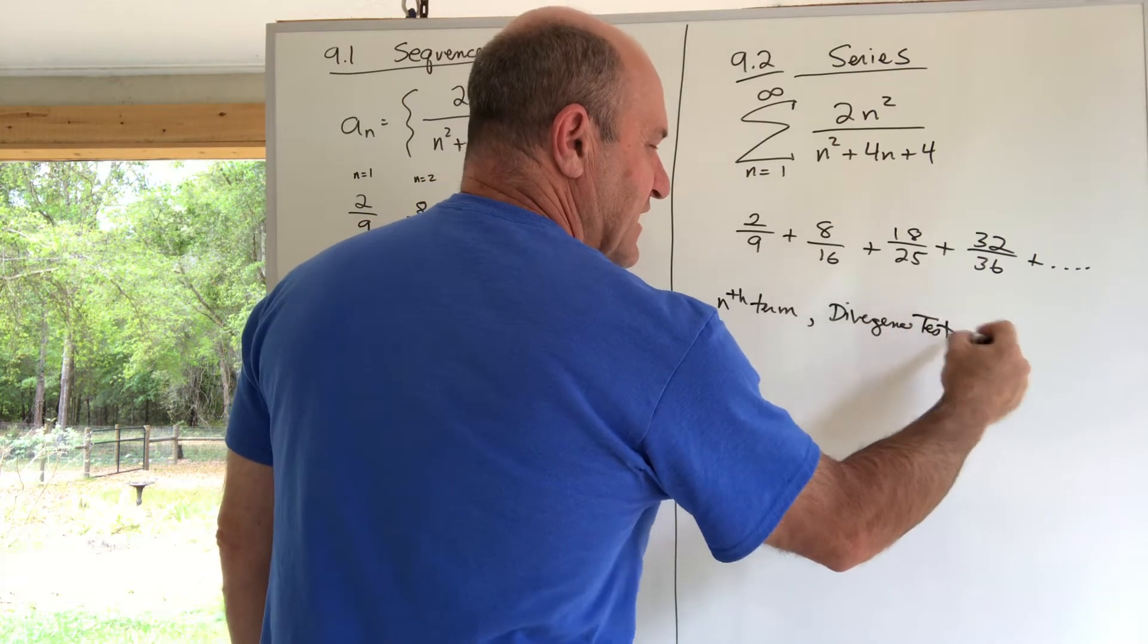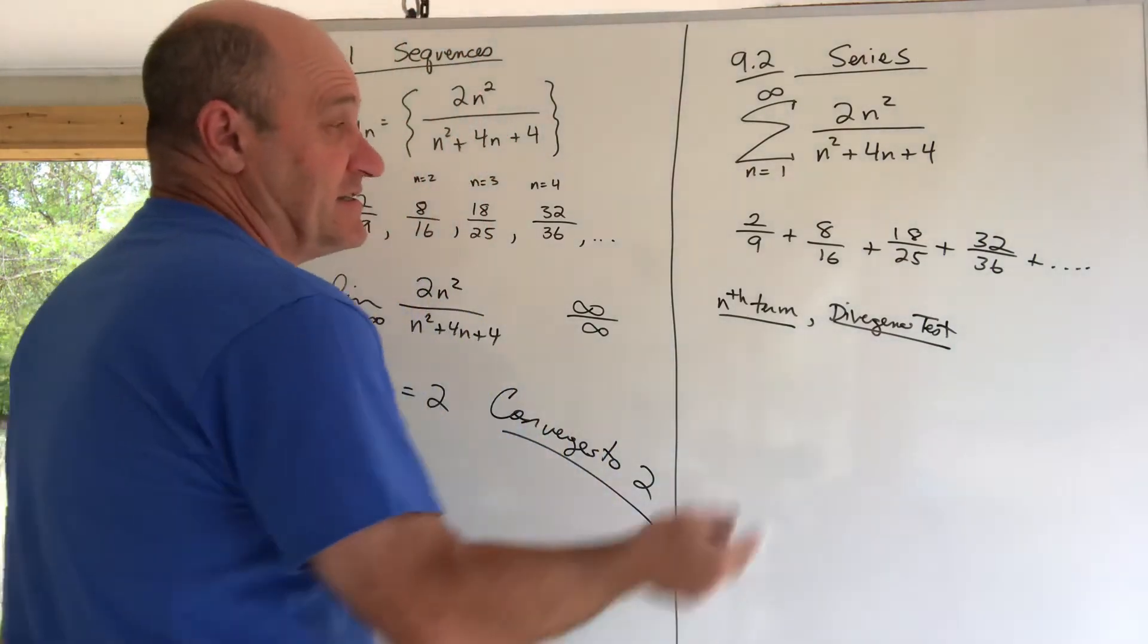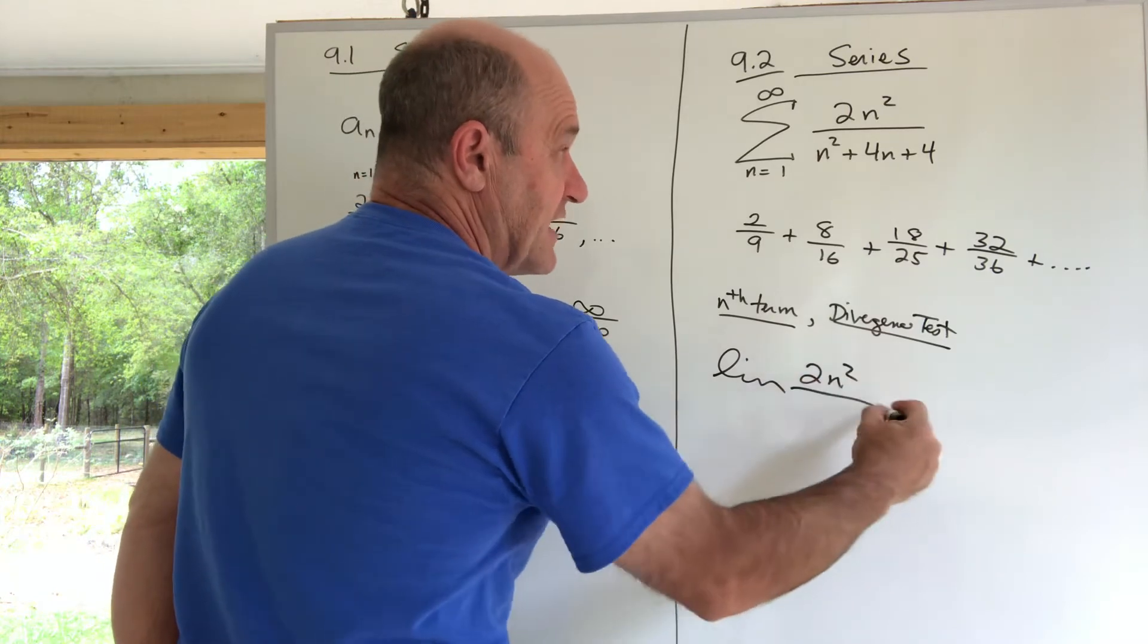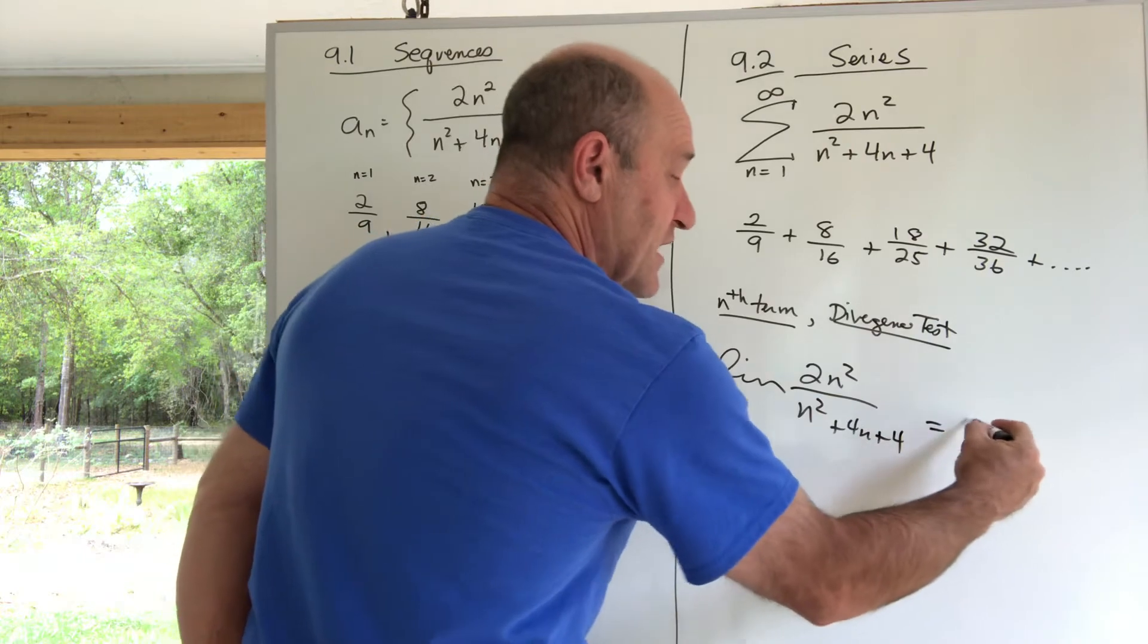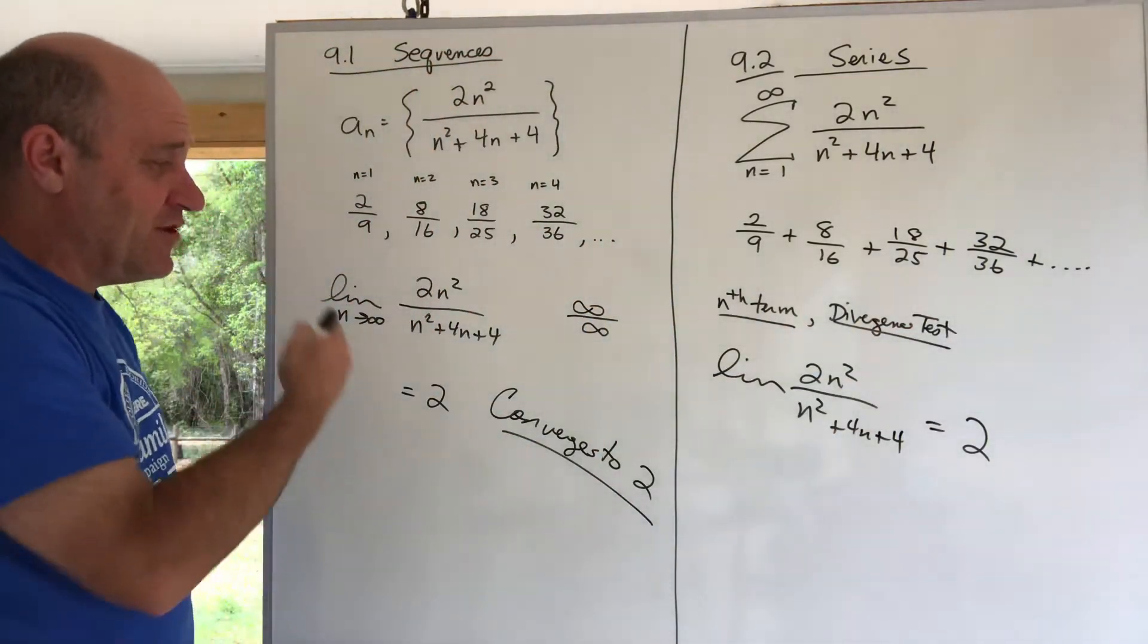Here's what it says: the nth term test or divergence test says take the limit of this and see what you get - the limit of 2n² over n² + 4n + 4, this nth term. And we do get 2.